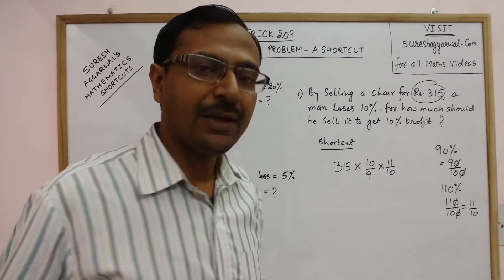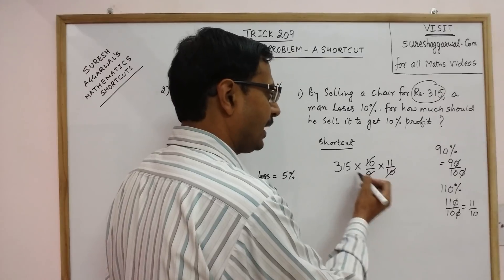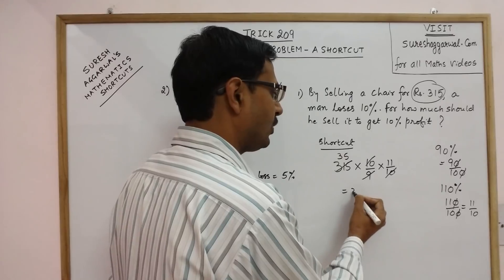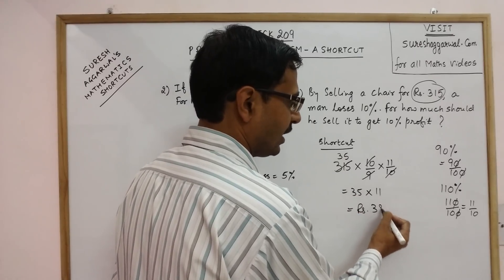Now multiply: 315 times 10 upon 9 times 11 upon 10. The 10 gets cancelled, 9 threes are 27, and 9 fives are 45. So 35 into 11 gives rupees 385 as the answer.